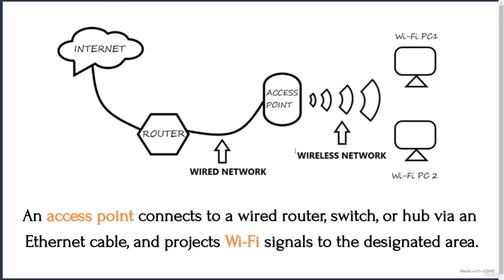Thus, in a nutshell, access points are the devices that help nodes connect together and form a wireless network, and at the same time they also provide internet connectivity to those wireless nodes, which are known as stations.